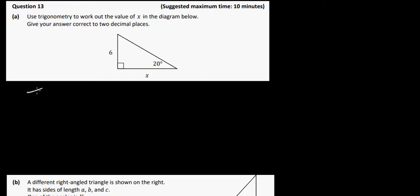What we're going to use here is tan, because we have the opposite and the adjacent. So the tan of 20 degrees is equal to 6 over x. That will just multiply across by x. That will give us x tan 20 is equal to 6.